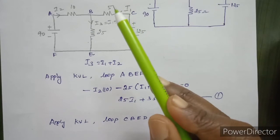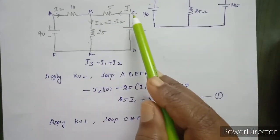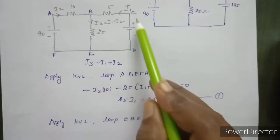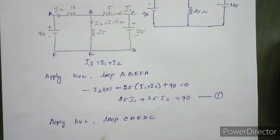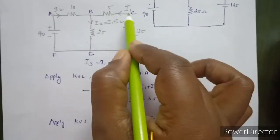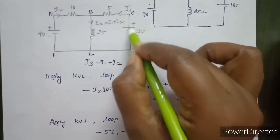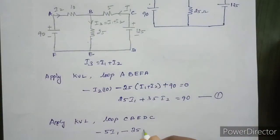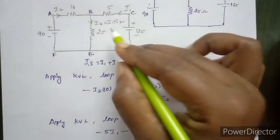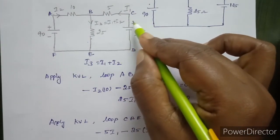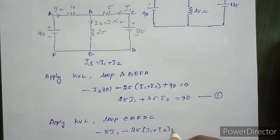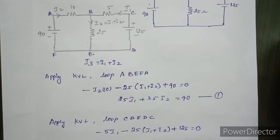The loop is C, B, E, D, C. Because the current flow direction is like this, we use this loop. We can drop across this resistor: minus 5, that is current I1. It has a resistor, then minus 25, that is current — minus I2. The direction is the same. So 25 times I1 plus I2. Then minus 2 plus, voltage rise, plus 125 equals 0. Simplifying: 30·I1 plus 25·I2 equals 125. This is equation number 2.